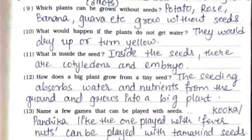Twelfth: how does a big plant grow from a tiny seed? The seedling absorbs water and nutrients from the ground and grows into a big plant. Thirteenth: name a few games that can be played with seeds — kuka or panchika, like the one played with fever nuts, can be played with tamarind seeds.